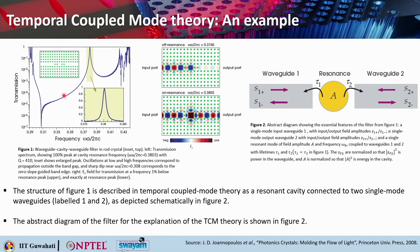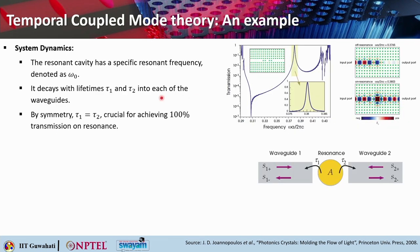In this particular case, tau_1 and tau_2 are equal. The S_L± are normalized so that |S_L±|² represents the power in the waveguide, and A is normalized so that |A|² gives the energy in the cavity, where L is 1 or 2. With that we can start analyzing the system.